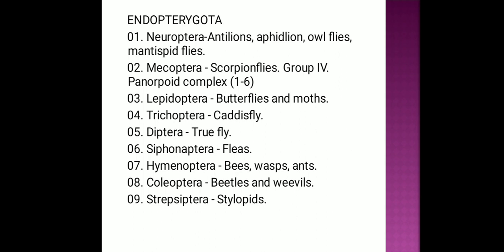Endopterygota consists of nine orders only: Neuroptera, Mecoptera, Lepidoptera, Trichoptera, Diptera, Siphonaptera, Hymenoptera, Coleoptera, and Strepsiptera.